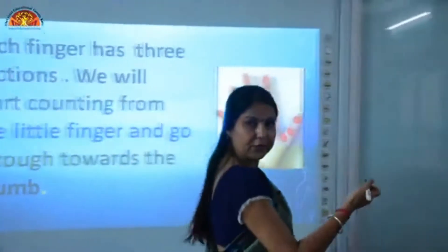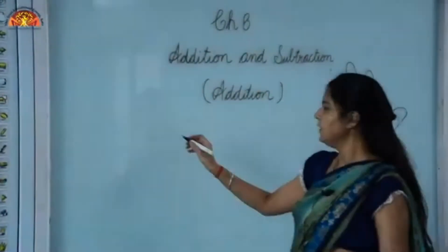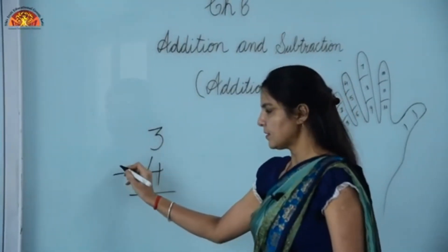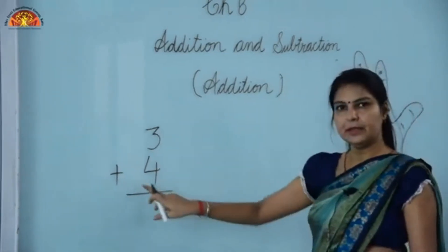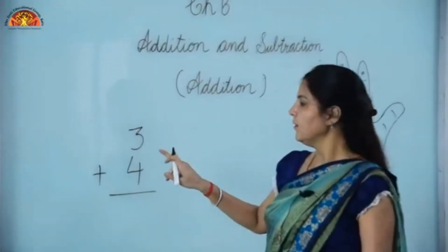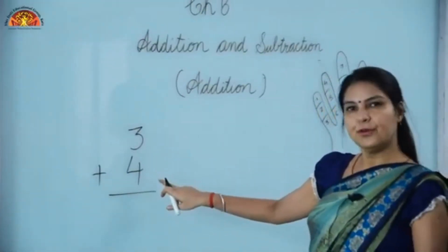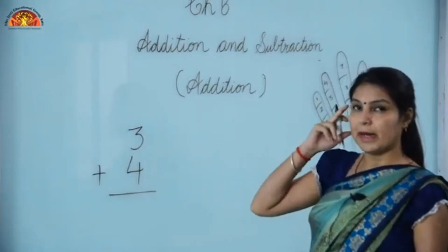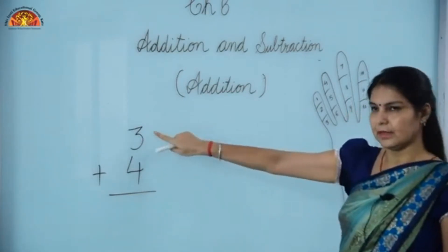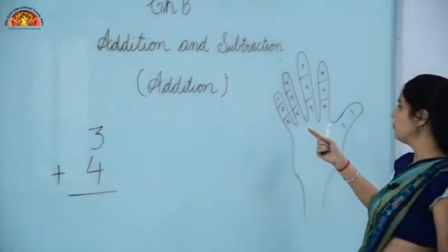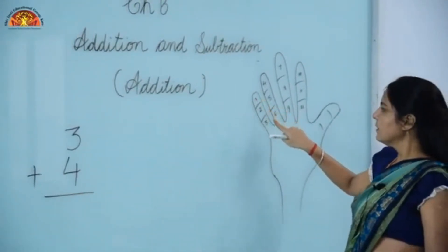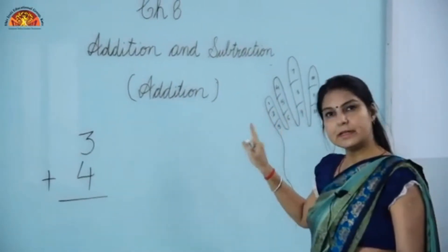Children, I am giving you one example on the board. Suppose we are going to add three plus four. We will keep the bigger number in our mind. Four is bigger, so we will keep four in our mind and count forward three on our fingers: five, six, and seven. That is our answer.